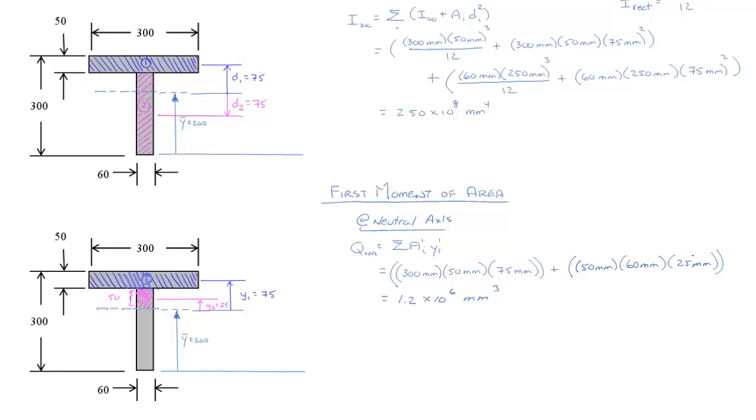Now the second part of this was to look at Q or the first moment of area at the flange web interface. Now to do that, of course, we pass our imaginary plane not at the neutral axis where it's shown, but actually up at the interface between the flange and the web. So this whole Area 2 disappears and we're no longer considering it. So the only thing we're considering is actually Area 1.